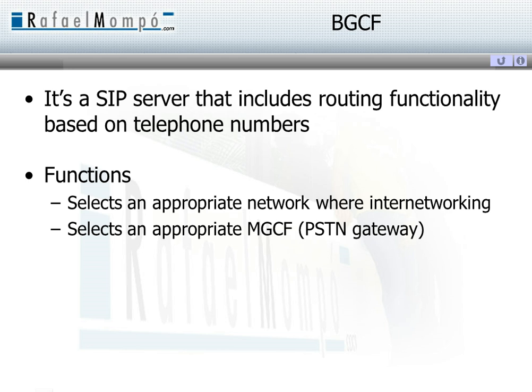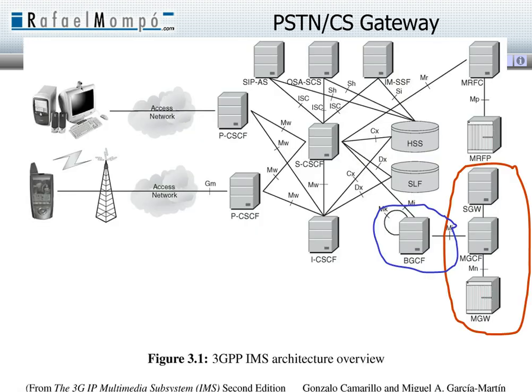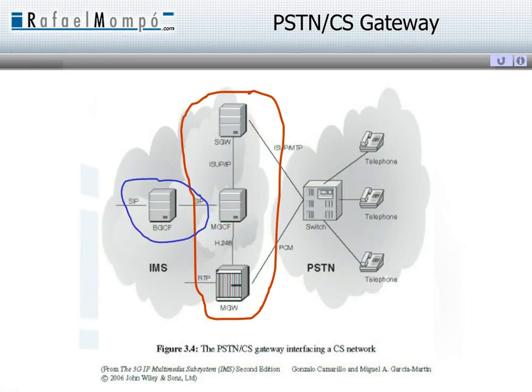The BGCF is a SIP server that routes calls based on telephone numbers. The BGCF can also be seen as a gateway to the public circuit switched telephone network.